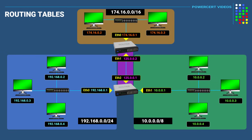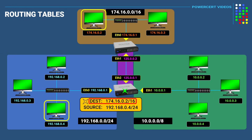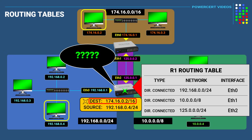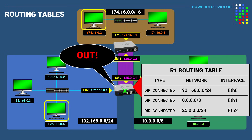Now let's say that a computer on the 192 network wanted to communicate with a computer on the 174 network. The computer will send a data packet to the router, and when the router receives the packet, it'll look at the destination IP address of the packet, which is 174.16.0.2, and refer to its routing table to determine where to send the packet. But the problem is that the directly connected routing table doesn't refer to anything for the 174 network, because directly connected routing tables only show networks that are directly connected to the router. So since this router can't find the 174 network, the router thinks that the 174 network doesn't even exist and would just drop the packet.